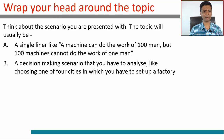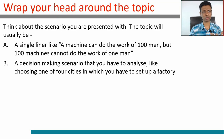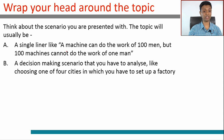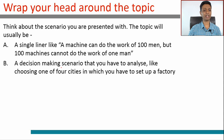I'm going to start with a couple of examples on what kind of topic you might get. A topic could be a single line like: 'A machine can do the work of 100 men, but 100 machines cannot do the work of one man.' Or you could get a decision-making scenario that you have to analyze — whether you have to set up a factory or plan something.